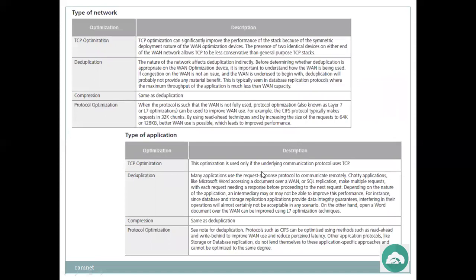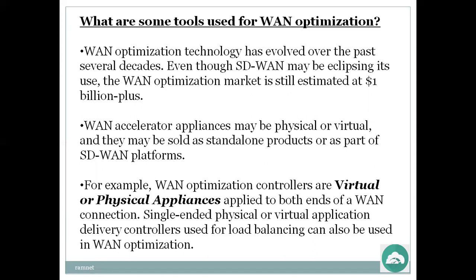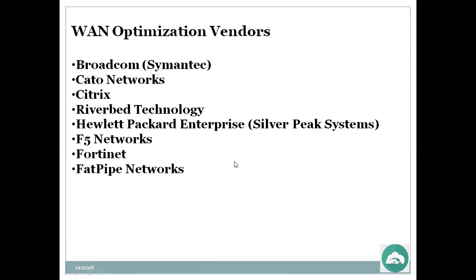What tools are used for WAN optimization? Even though SD-WAN may be eclipsing its use, the WAN optimization market is still estimated at one billion dollars. WAN accelerator appliances may be physical or virtual and may also be sold as standalone products or as part of SD-WAN platforms. WAN optimization controllers are virtual or physical appliances applied to both ends of the WAN connection. Single-end physical or virtual application delivery controllers used for load balancing can also be used for WAN optimization.